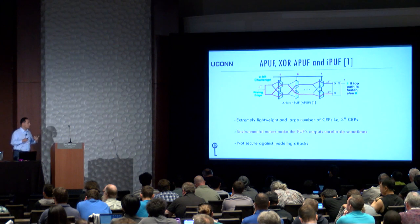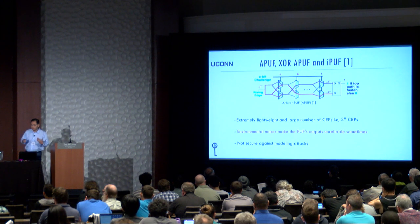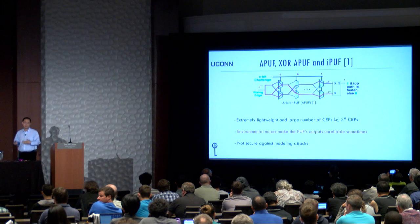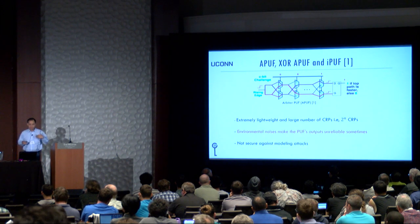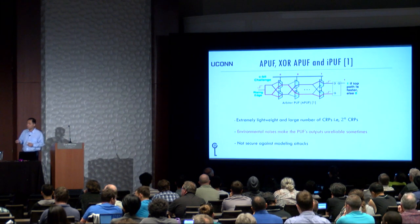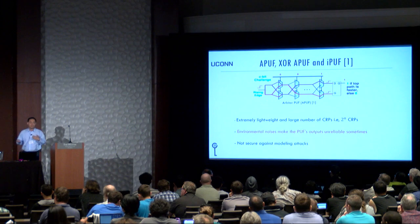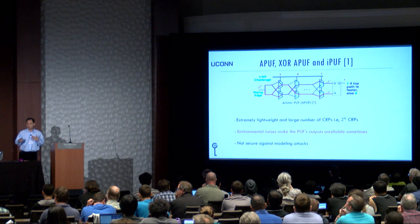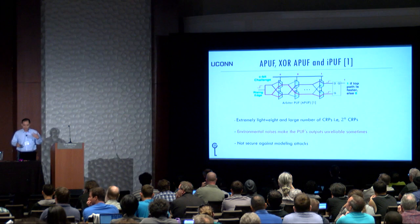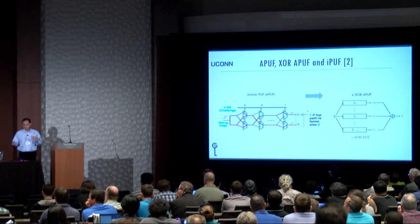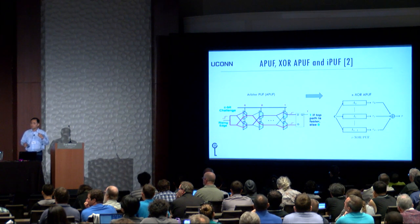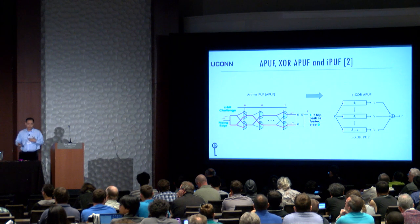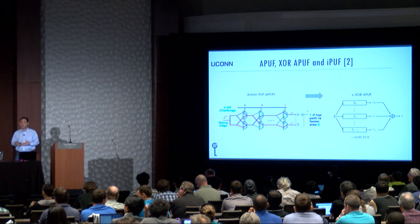The Arbiter PUF design essentially compares the delay difference between two paths, and based on the comparison result it generates a response bit of either 0 or 1. The paths are determined by the challenge bits, giving it an exponentially large challenge-response space, making it a strong PUF. However, it has a linear model, so it can be easily attacked by machine learning algorithms. Someone proposed XOR-ing the responses of multiple Arbiter PUF instances together to create XOR Arbiter PUFs. This PUF is secure against all classical machine learning attacks, but is not secure against reliability-based attacks.